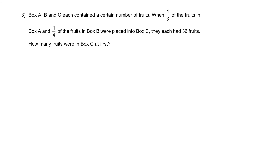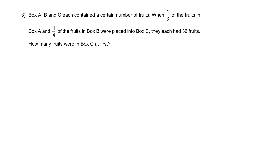Question three: Boxes A, B and C each contain a certain number of fruits. When 1/3 of the fruits in box A and 1/4 of the fruits in box B were placed into box C, they each had 36 fruits. How many fruits were in box C at first? The keyword is 'at first,' so I'll work backwards.